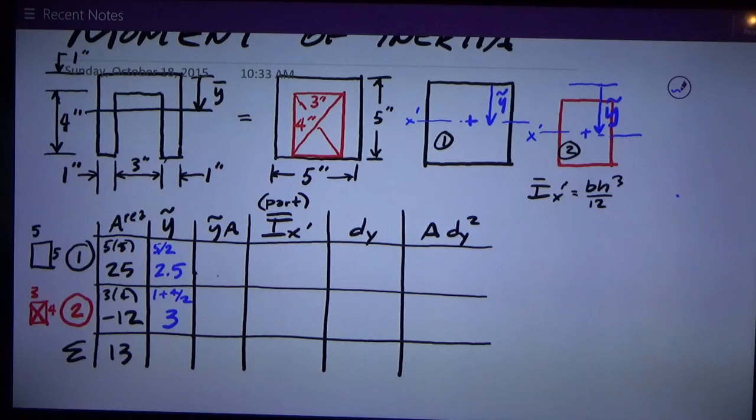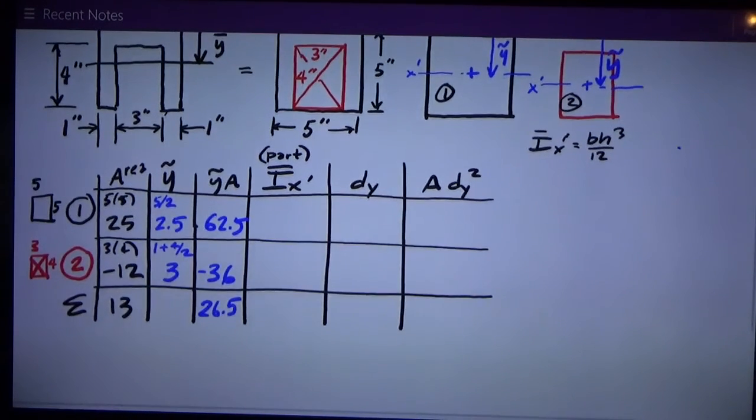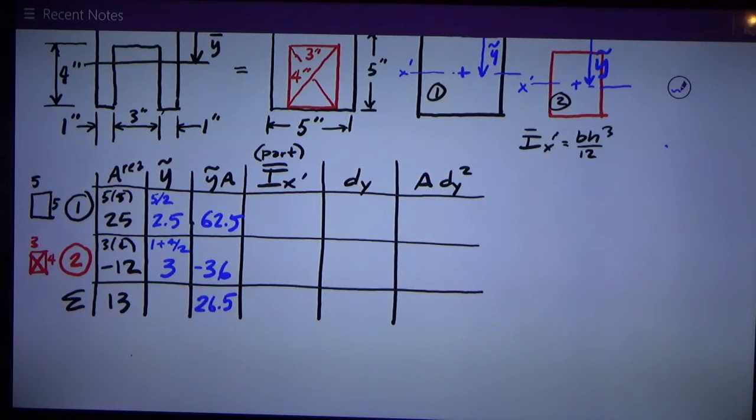Y tilde A is multiplying those two first two columns together, so twenty-five times two point five is sixty-two point five. Negative twelve times three is negative thirty-six. I sum that column and I get twenty-six point five. Now I can figure y-bar for the whole shape. Y-bar is the sum of the y tilde A's divided by the sum of the areas, which is those two numbers, twenty-six point five divided by thirteen is two point oh three eight.